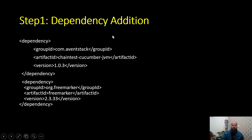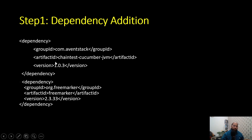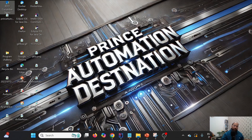To set up Chain Test Report, we first need to add this particular dependency with version 1.0.3. Initially it was 1.0.1, but I worked in collaboration with Anshoo, the developer of ExtentReport and ChainTest Report, and we fixed a few issues related to screenshot and path — and now it is version 1.0.3. Let me go to the notepad, pick this dependency, and add it into the pom.xml.